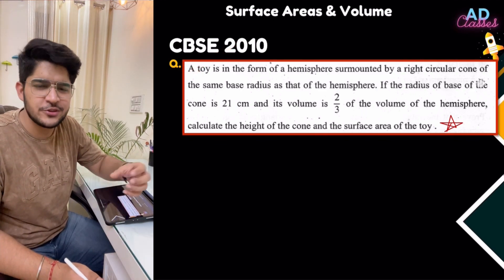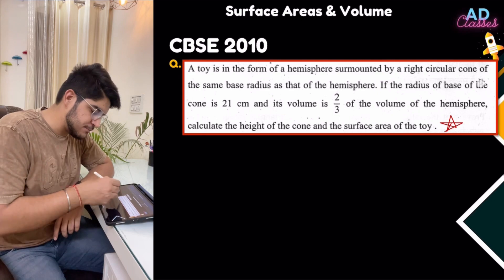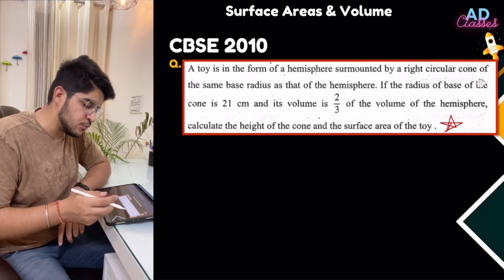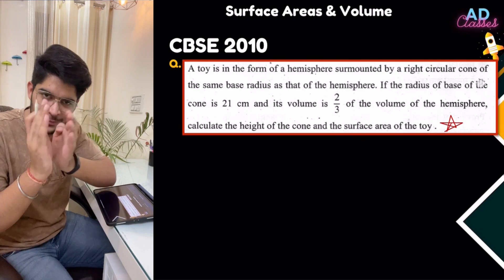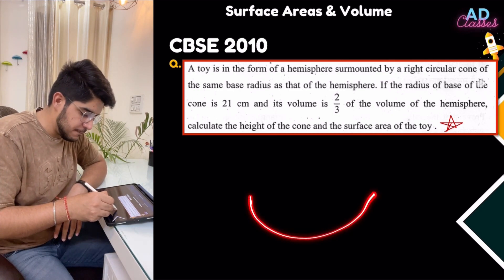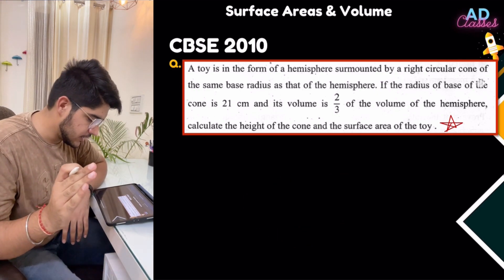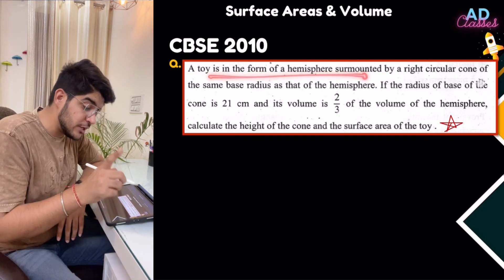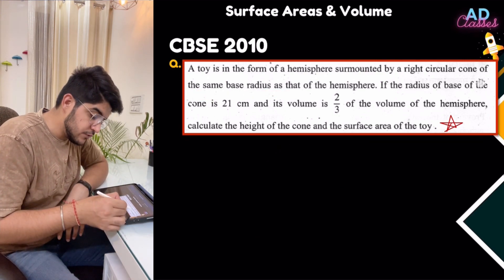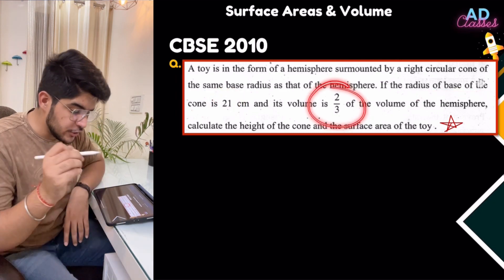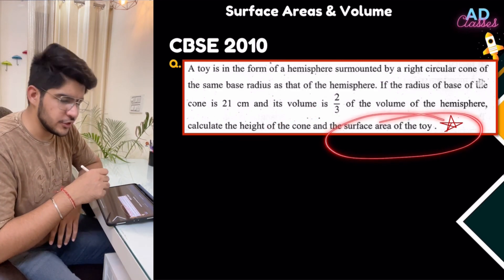The first question is from 2010. In 2010, this whole chapter was asked. The question is: a toy is in the form of a hemisphere surmounted by a right circular cone of the same radius. The base of the cone is 21 and its volume is 2/3 of the volume of the hemisphere. Calculate the height of the cone and the surface area of the toy.